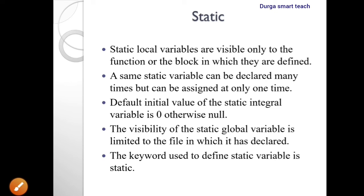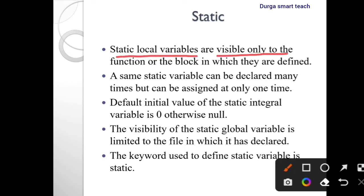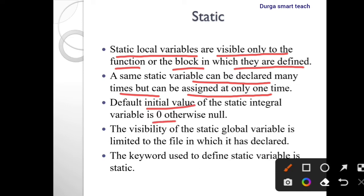The next one is static. Static local variables are visible only to the function or block in which they are declared. The same static variables can be declared many times but can be assigned a value only one time. The initial value for static variables is zero or null. The visibility of a static variable is limited to the file in which it is declared. The keyword 'static' is used for declaring static variables.